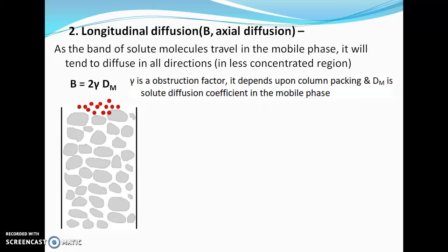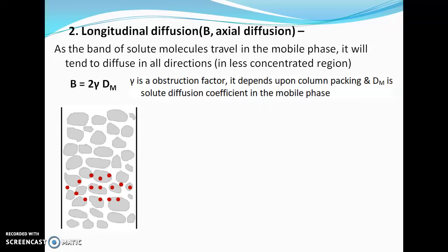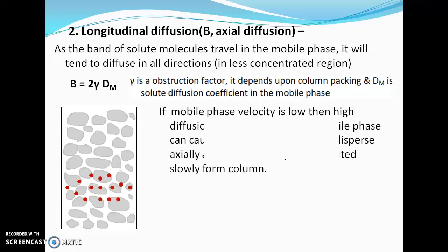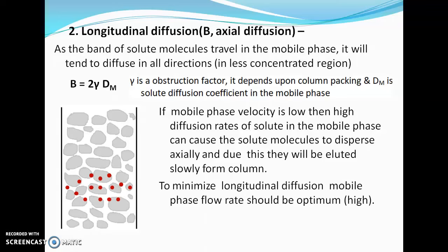In longitudinal diffusion, as solute molecules travel down the column driven by the mobile phase velocity, they start dispersing in all directions into less concentrated regions. As the molecules travel farther down the column, the diffusion increases and such a band becomes a broad band. If mobile phase velocity is low, high diffusion rates cause solute molecules to disperse axially and get eluted slowly. To minimize longitudinal diffusion, the mobile phase velocity should be optimum — generally high but optimal.